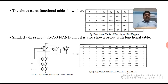Three-input CMOS NAND gate: For a three-input NAND gate, three P-channel devices are placed in the P-channel area (connected in parallel) and three N-channel NMOS transistors are placed in the N-channel area (connected in series), following the same dot-operation rule. The functional table for this three-input CMOS NAND gate is shown accordingly.